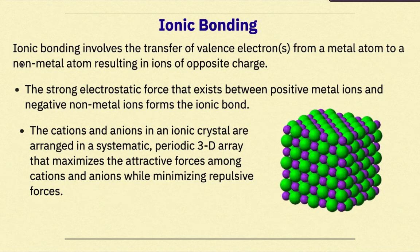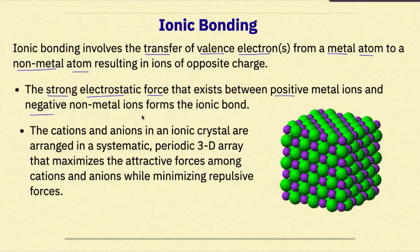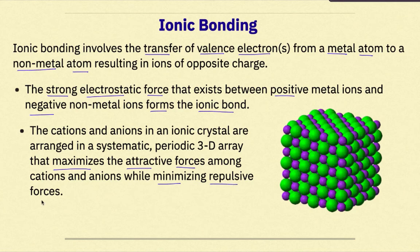Ionic bonding involves the transfer of valence electrons from a metal atom to a nonmetal atom, resulting in ions of opposite charge. The strong electrostatic force that exists between positive metal ions and negative nonmetal ions forms the ionic bond. The cations and anions in an ionic crystal are arranged in a systematic periodic 3D array that maximizes attractive forces among cations and anions while minimizing repulsive forces.